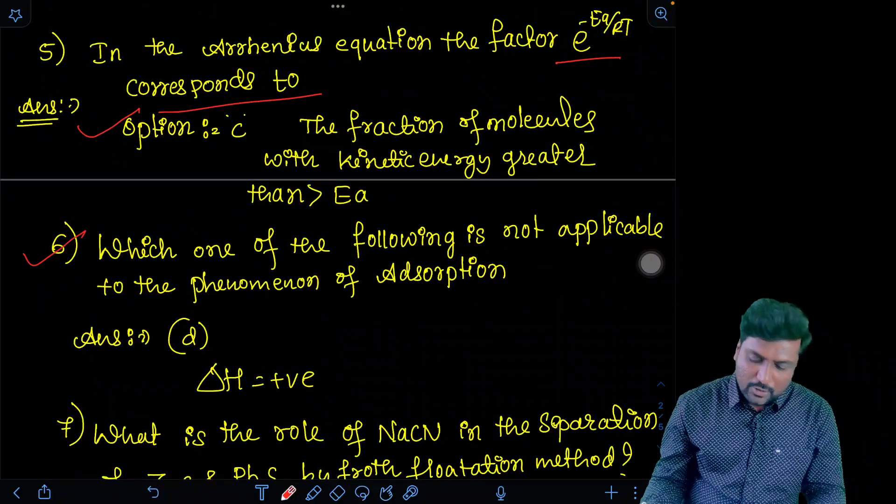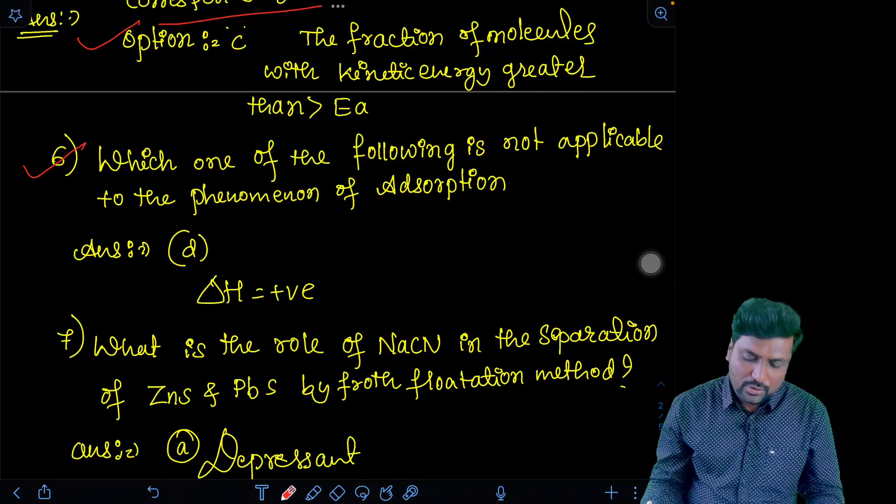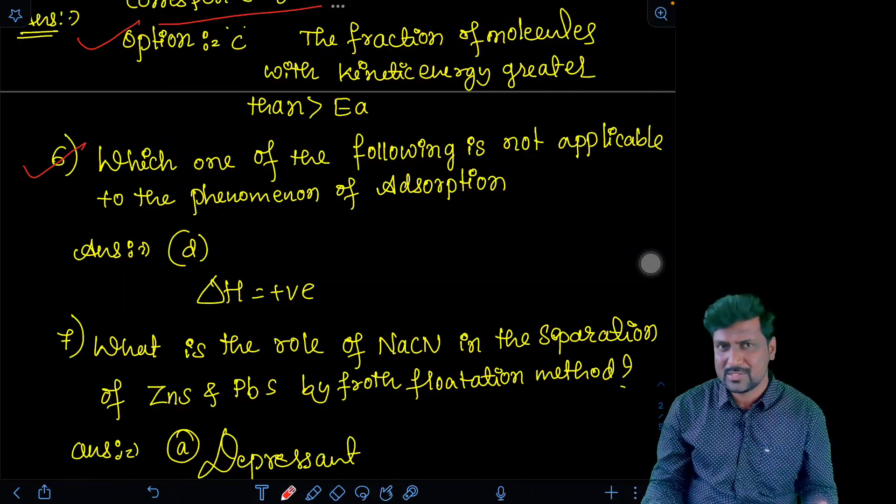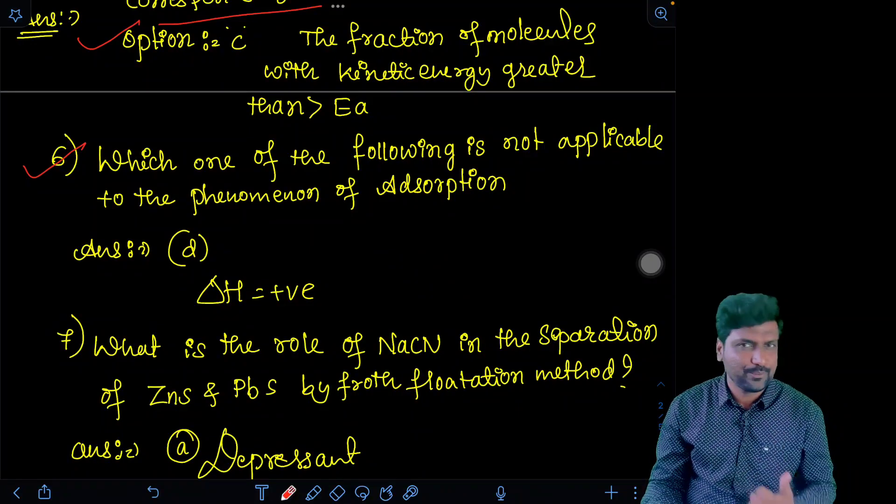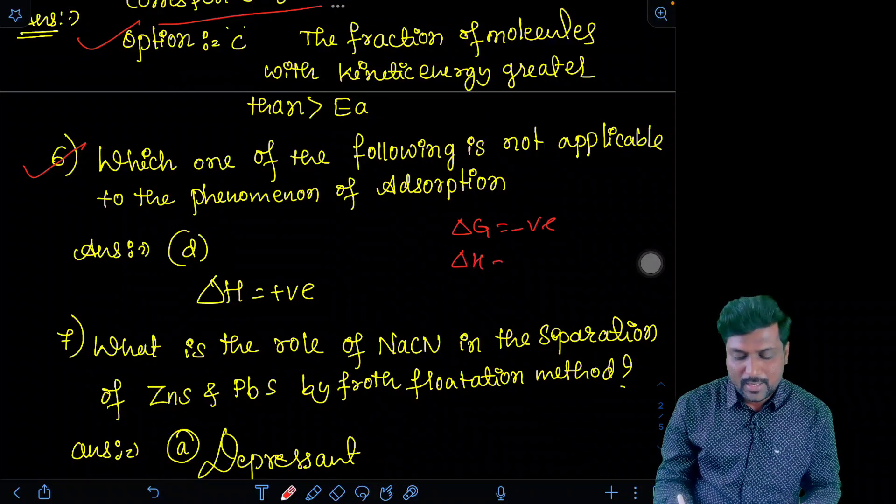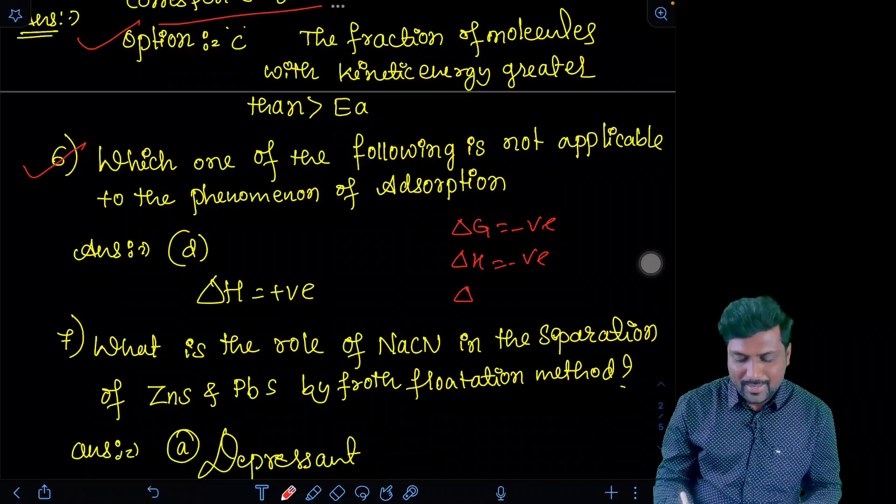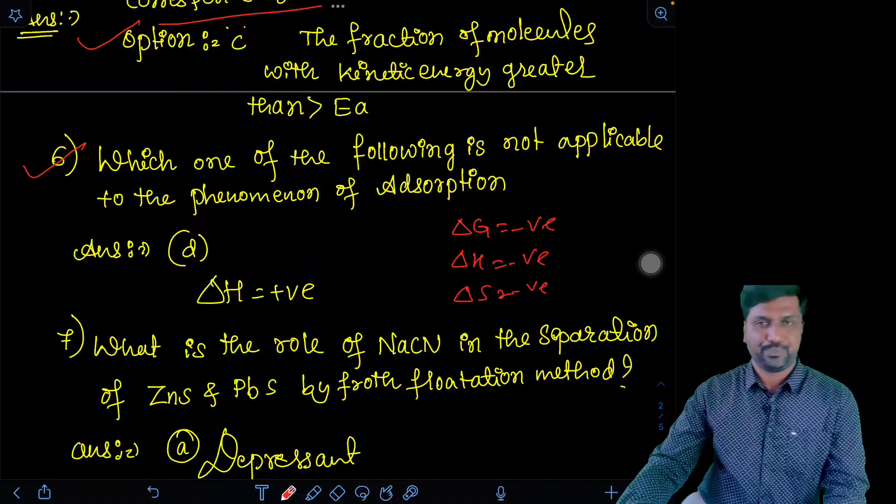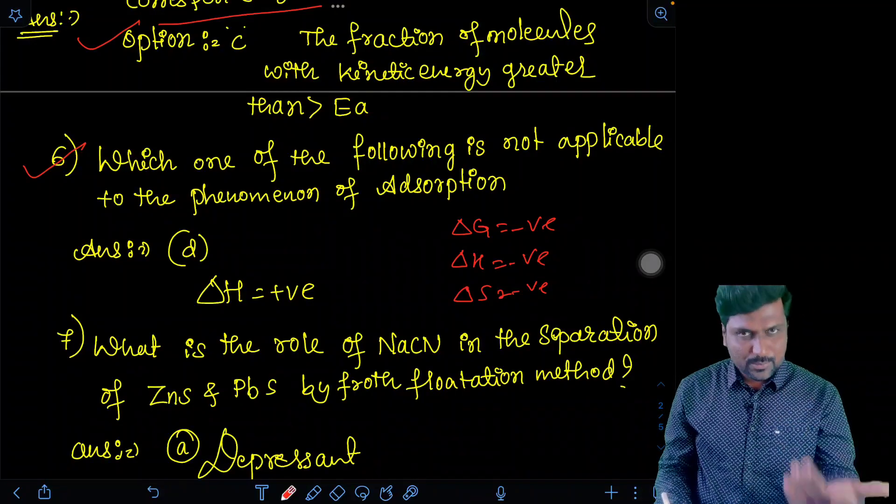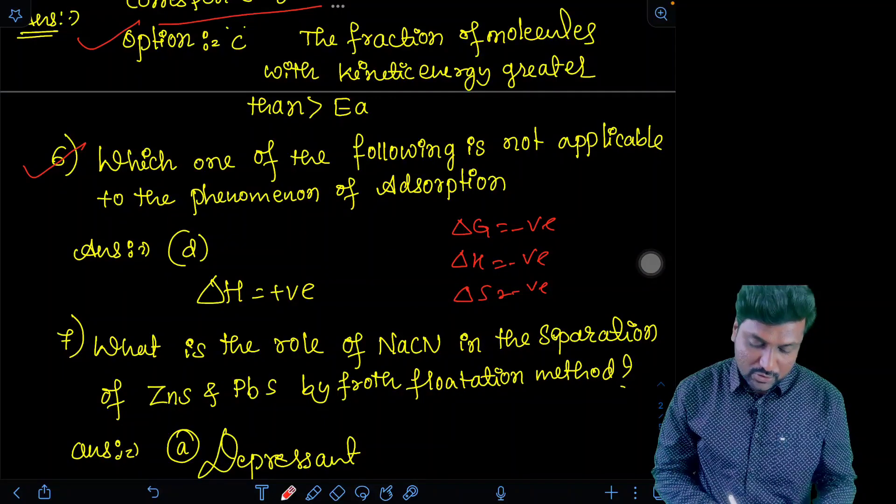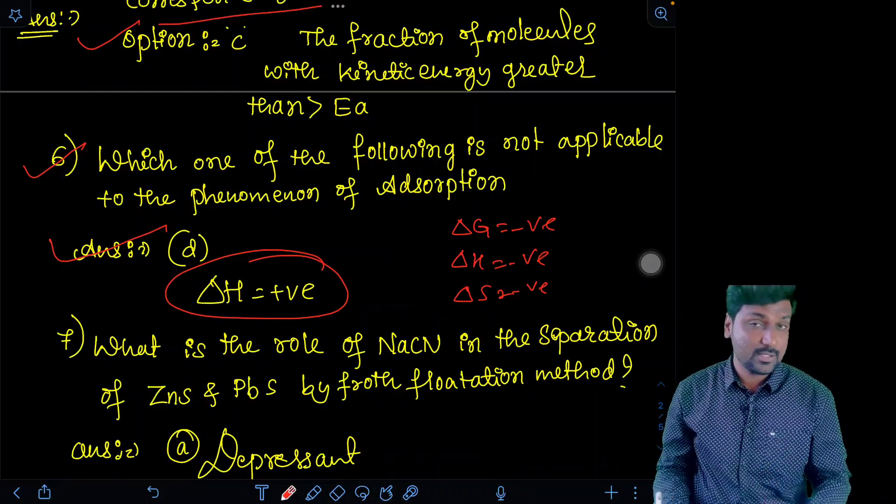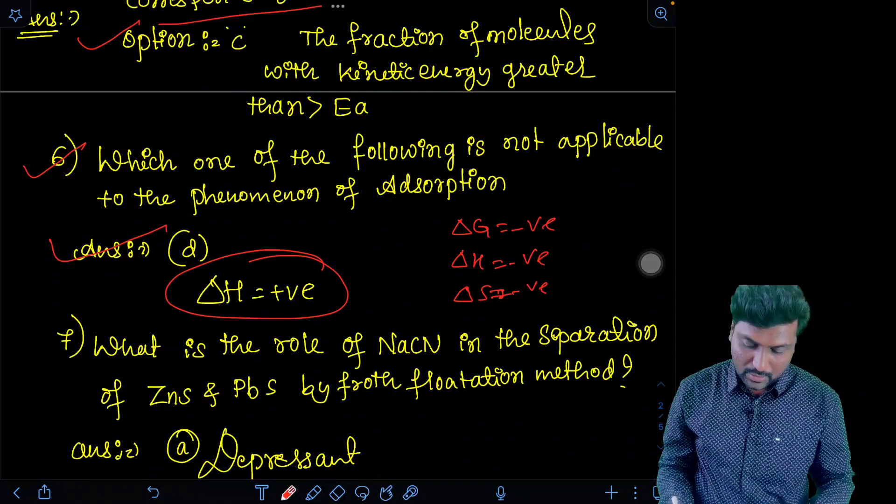Question number six: which one of the following is not applicable to the phenomenon of adsorption? We know that adsorption is a natural phenomenon. It is a spontaneous process. Therefore, Gibbs free energy will be negative. Gibbs free energy, when it will be negative? When delta G is negative, delta H is negative and delta S is also negative. So all must be negative. All must be negative, then only Gibbs free energy is negative. Which phenomenon is not possible? Delta H is positive is not possible. Therefore, the answer is delta H is positive.